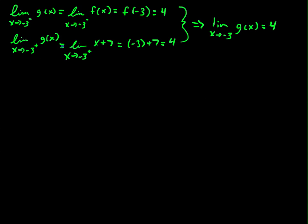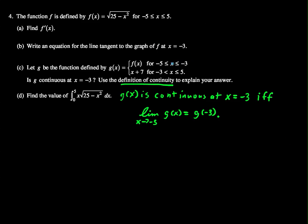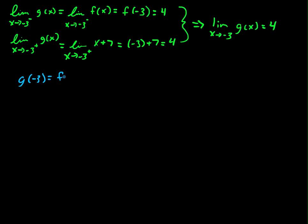We also need to find g of negative 3. That's actually pretty easy. When x is equal to negative 3, it's in this first piece. We evaluate that by evaluating f, so that equals f of negative 3, which we know equaled 4, square root of 25 minus 9.